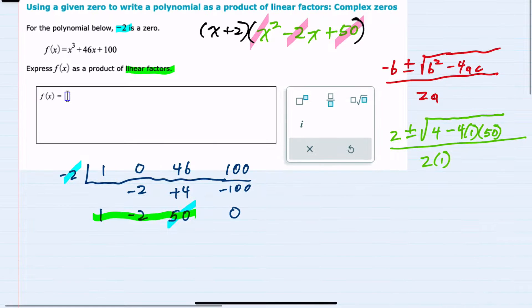And now having made that substitution, I can simplify here. Underneath the radical, this would be 4 minus 4 times 1 times 50 is 200. And this is over 2.